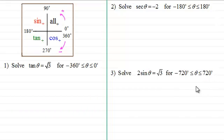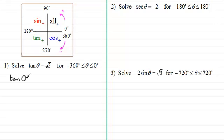Let's start with the first one here, where we've got to solve tan theta equals root 3, for theta greater than or equal to minus 360 degrees but less than zero degrees. We've got a positive value here. I'm often asked why isn't it plus or minus — well, there's no plus or minus, we're just taking the positive value.